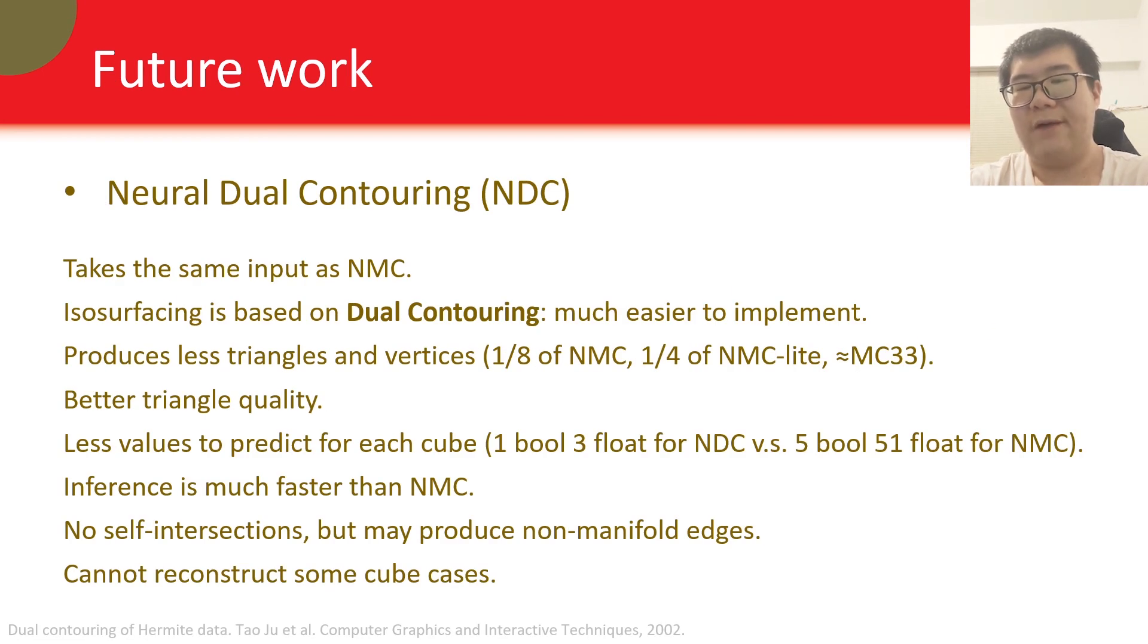For future work, we have this Neural Dual Contouring, or NDC, to solve some of the aforementioned issues. NDC takes the same input as NMC. It is based on dual contouring, therefore much easier to implement. It produces less triangles and vertices with better triangle quality. It has less values to predict for each cube, so that we can use a smaller network. Therefore, the training and inference are much faster than NMC. It guarantees no self-intersections, but may produce non-manifold edges. It cannot reconstruct some cube cases.